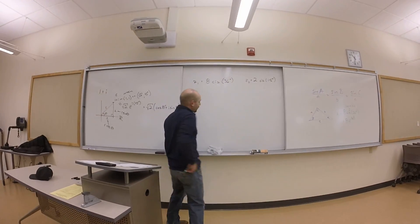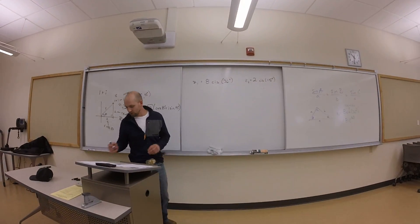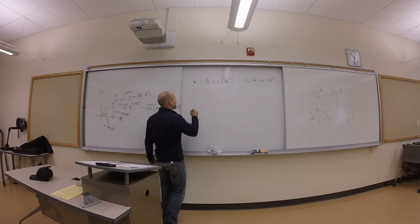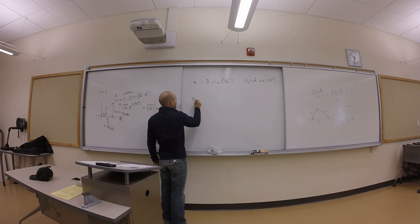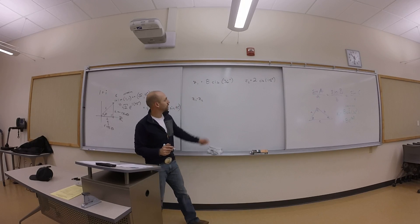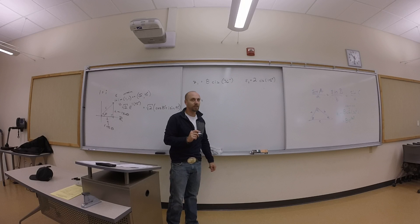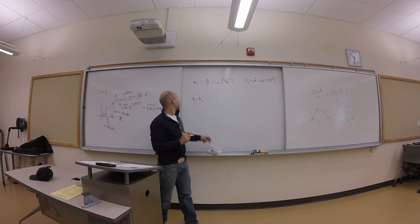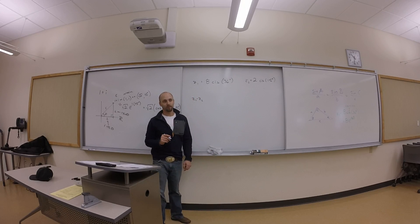All right, so I want to do some calculations with complex numbers. The first one is just given that Z1 is 8 cis 36 degrees and Z2 is 2 cis 15 degrees, can I calculate Z1 times Z2?